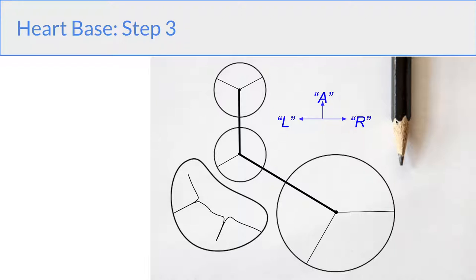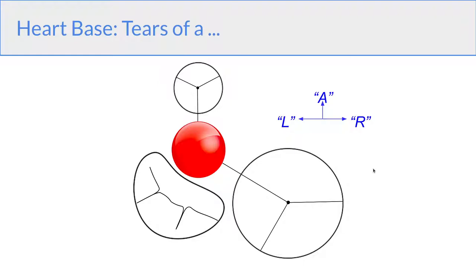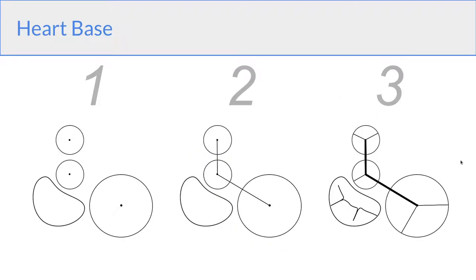And finally, we divide each circle into equal thirds. So this gives you the correct location of all the commissures and leaflet separations. So again, the steps where we draw three circles, we mark the centers, we connect the centers, and then divide them into equal thirds.